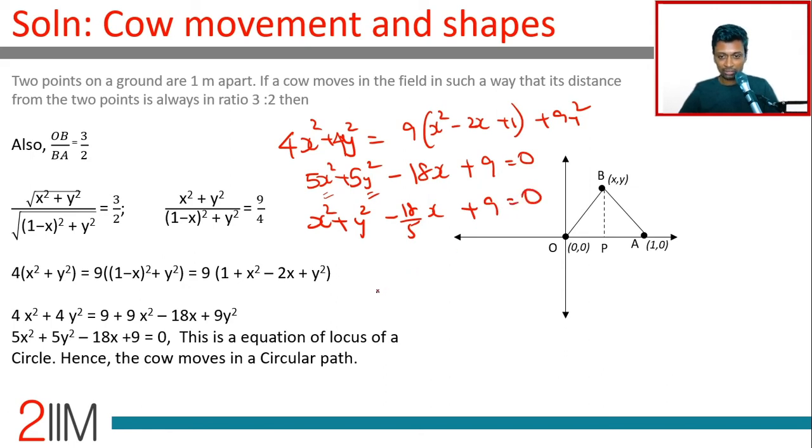How will we simplify this? We can write this as x square minus 18 by 5 x plus something is a perfect square, plus y square equal to some constant. The form x minus h the whole square plus y minus 0 the whole square equal to radius square. This will move in a circular path.